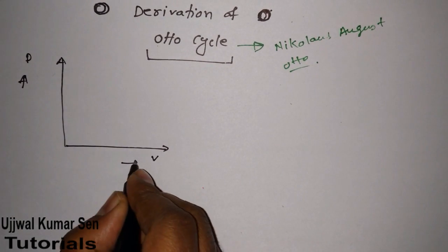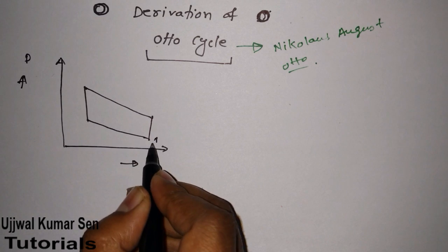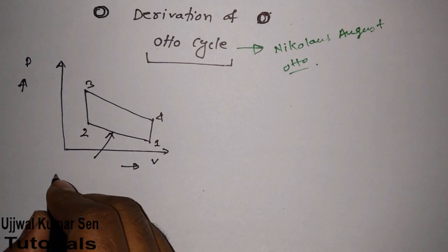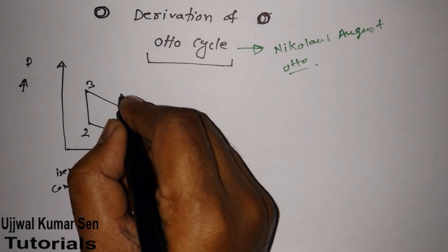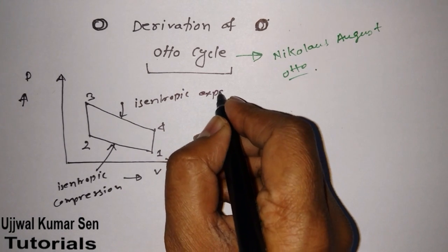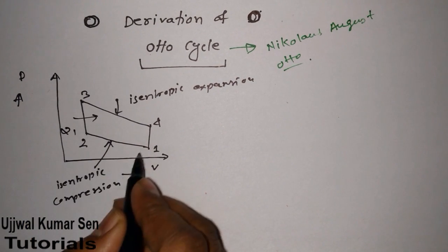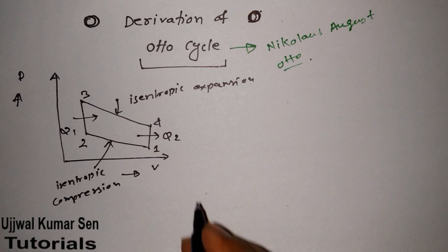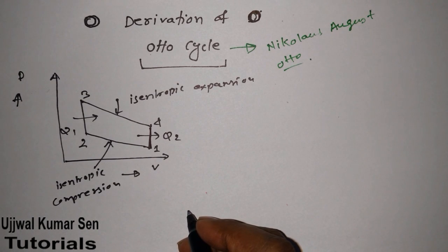Let's go for the PV diagram — P for pressure, V for volume. In this diagram we get points 1, 2, 3, and 4. From 1 to 2 is known as isentropic compression. From 3 to 4 is known as isentropic expansion. From 2 to 3, heat Q1 is being added, and from 4 to 1, heat is being rejected. Both 2 to 3 and 4 to 1 are constant volume processes.